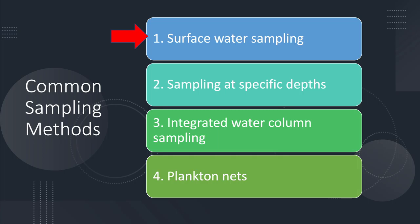Some of the most common methods for sampling plankton include surface water sampling, sampling at specific depths, integrated water column sampling, and plankton nets. There are advantages and disadvantages to each method.